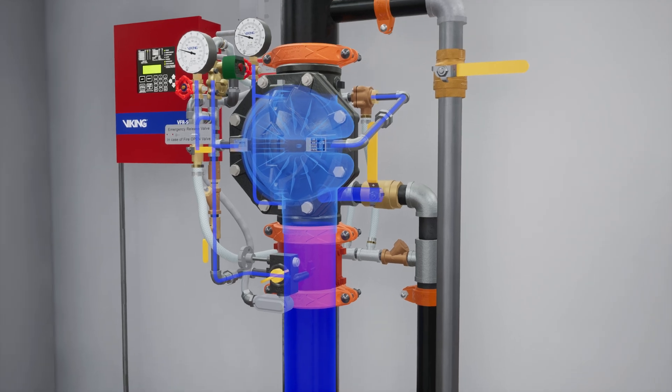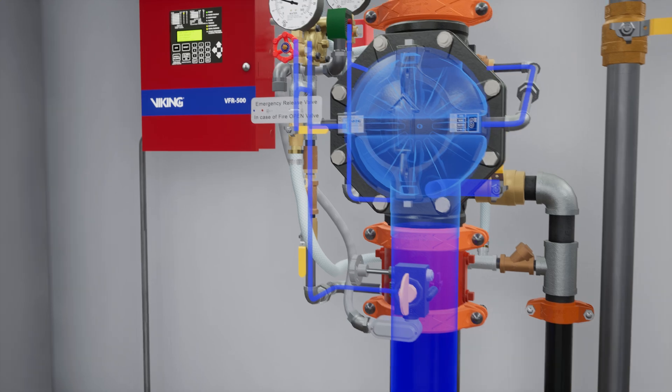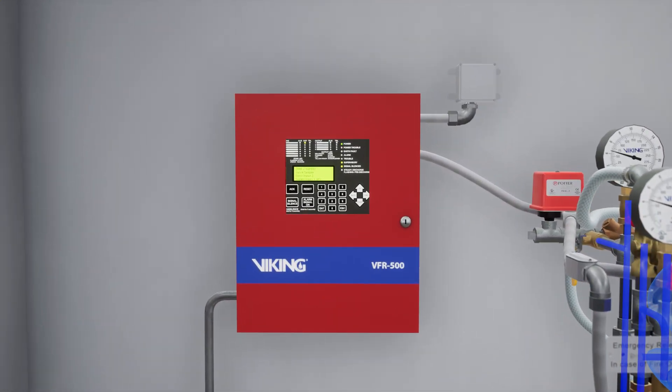Now fully open the water supply control valve. After the system water pressure is restored, any alarm panels that were activated will need to be reset to clear any active alarms.